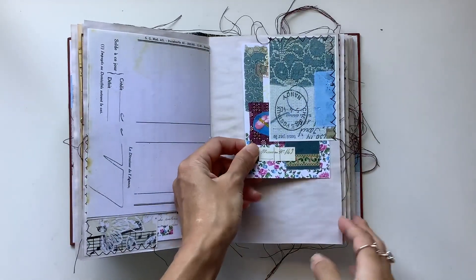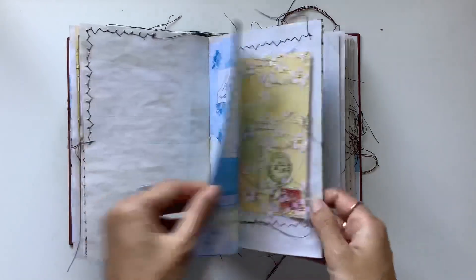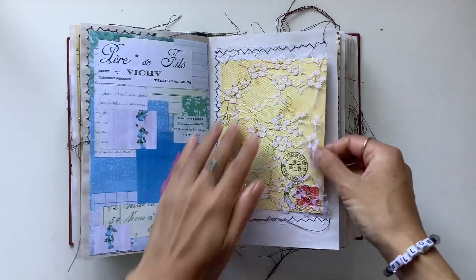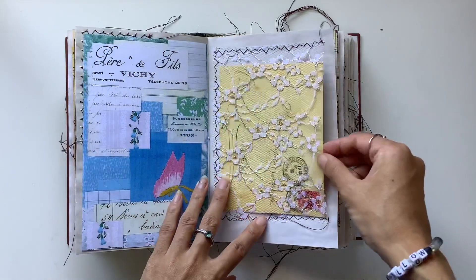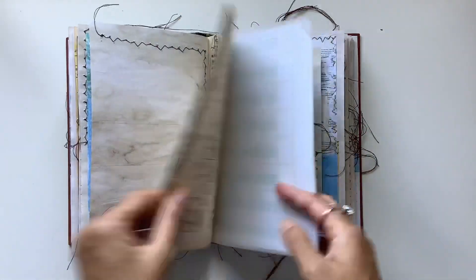And then we've got journal card in the tuck spot and the vintage French receipts. More tuck spots and journal cards. Love this pocket. This is vintage lace. And just tucked in a large envelope in that one.